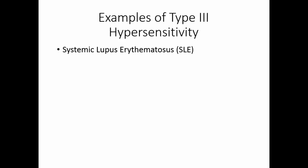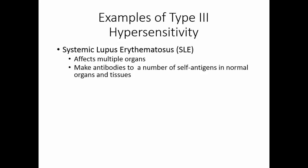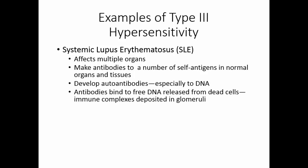A fourth example of type 3 hypersensitivity is systemic lupus erythematosus, or SLE. This can affect multiple organs. In this situation, antibodies are made to a number of self-antigens that are found in normal organs and tissues. They develop autoantibodies — antibodies to self — especially to DNA. DNA may be released from dead cells so that the antibodies can bind to this free DNA. These immune complexes can be deposited in the glomeruli, giving you glomerulonephritis.